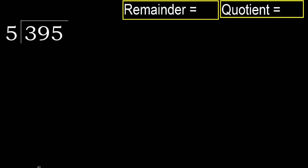395 divided by 5. 3 is less than 5, therefore move to the next digit.